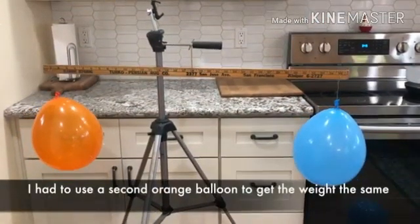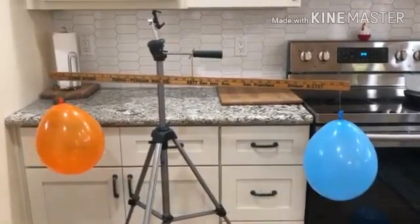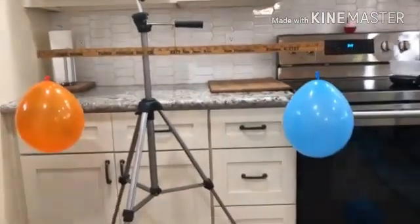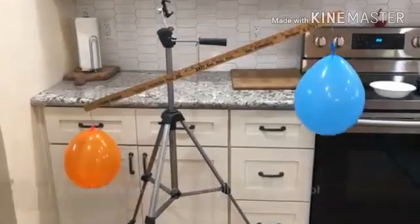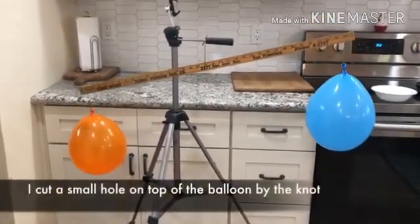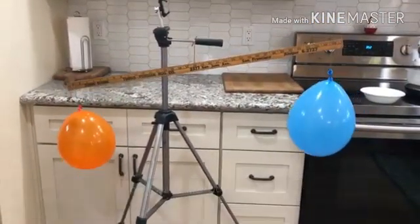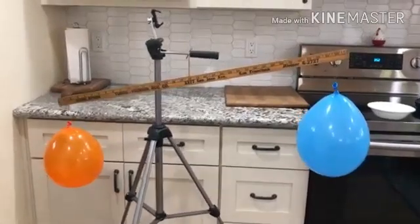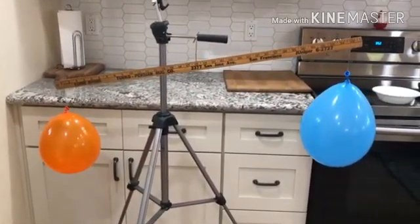We do the experiment. Now they both become similar. Slowly I am going to remove air from the orange balloon. I am removing air from the orange balloon by loosing the knot. We are able to see the size of the balloon is decreasing.